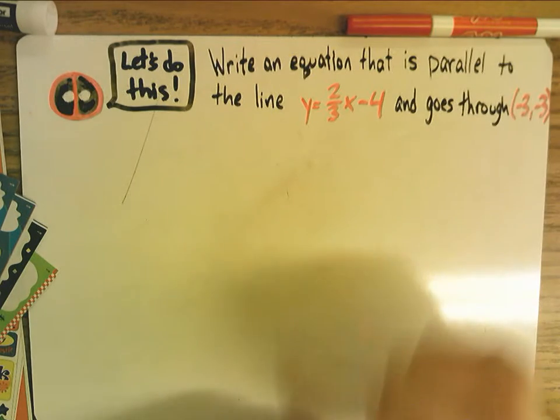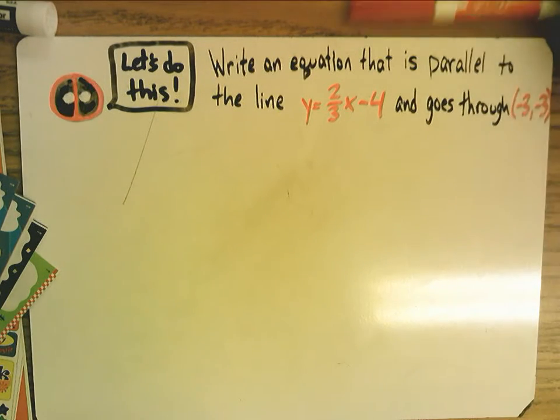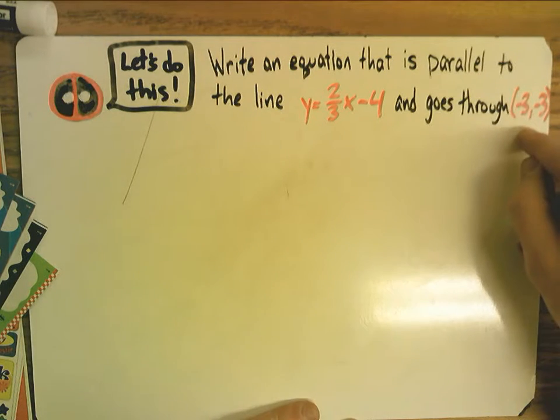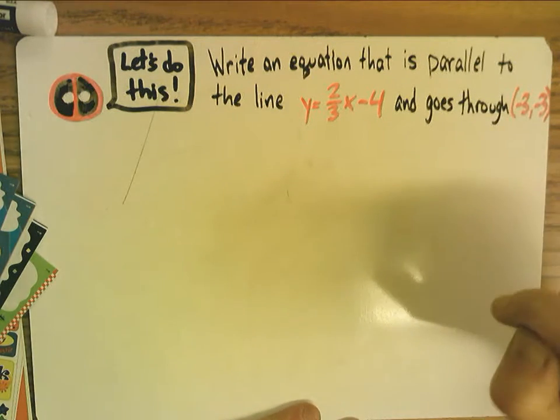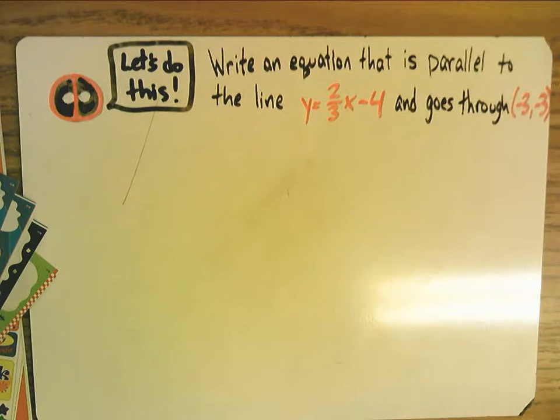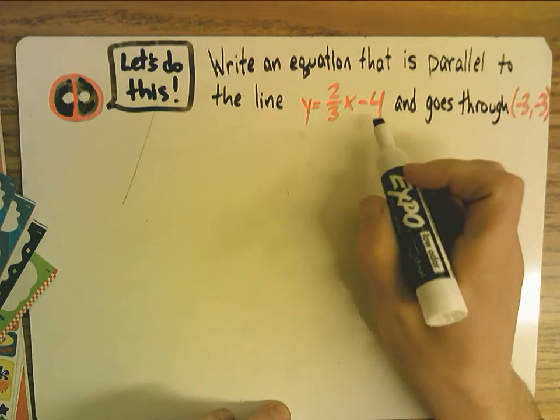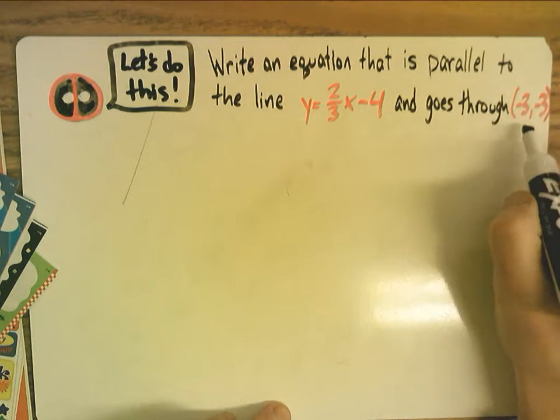Let's go ahead and try to write a line that is parallel to a given line and goes through a specified point. In this one specifically, it says we want to write an equation that is parallel to y equals two-thirds x minus four and goes through negative three, negative three.